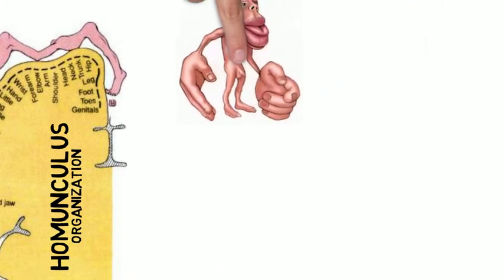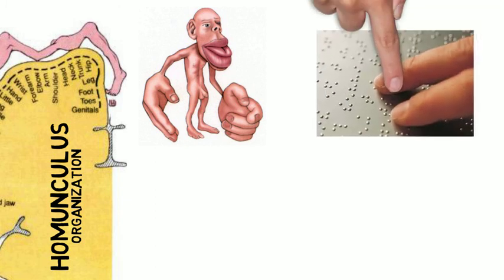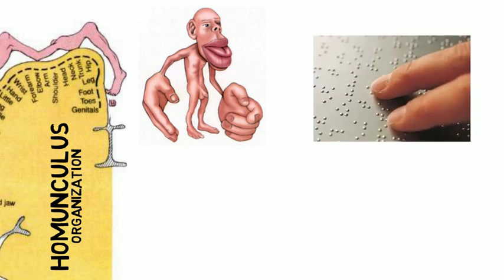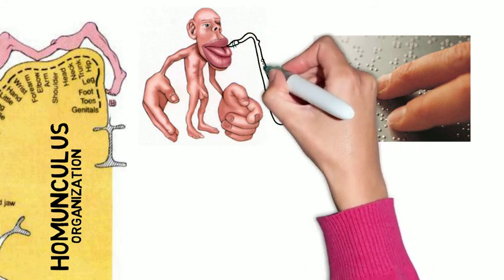Homunculus means 'little man' in Latin. The somatotopic organization of the homunculus may be reorganized by frequent or repetitive use of specific body parts, such as the fingertips when reading Braille, or the fingers and lips when learning to play the saxophone.